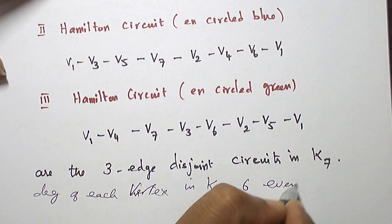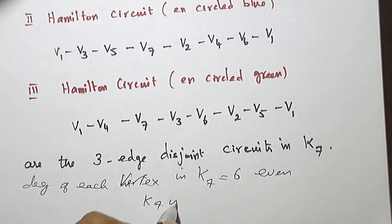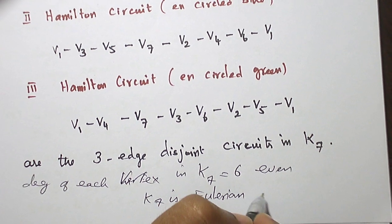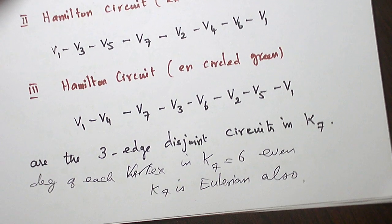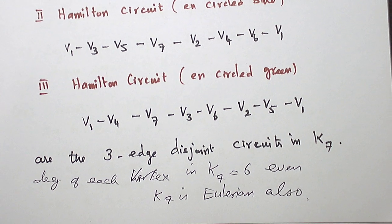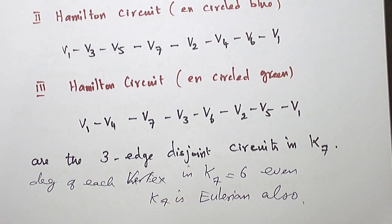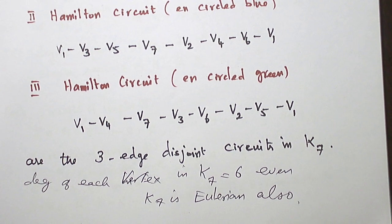That is even. So K7 is Eulerian also. If all the vertices of a graph have even degree, it is an Eulerian graph, as we have seen in a theorem. And if we use that theorem, K7 is Eulerian also.